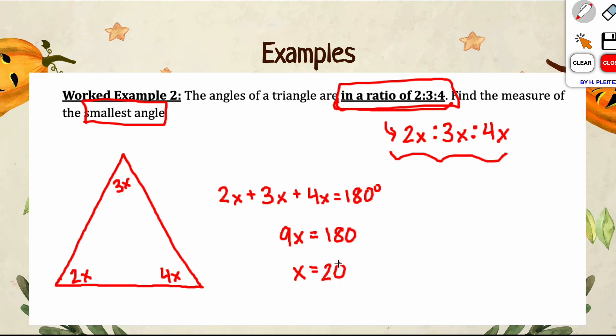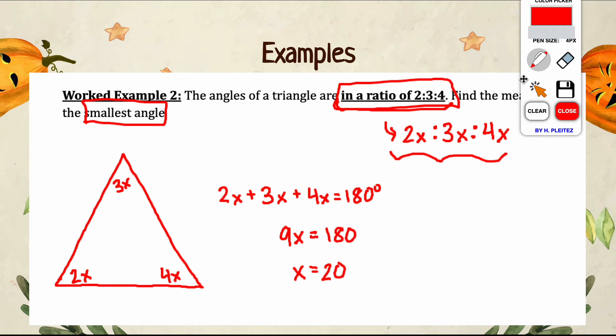If this was a multiple choice question and you guys circled 20, I would be very upset because it's not asking you for X. You want the smallest angle. In order to know the smallest angle, you have to substitute it back in. You only have to substitute it back into the 2X because that's going to be the smallest one; 3X and 4X are obviously going to be bigger. We have 2X here, and if we substitute, we get 2 times 20, and that angle, the smallest angle, is going to be 40 degrees. To find the other two, you would just have to substitute it in to the other two angles.